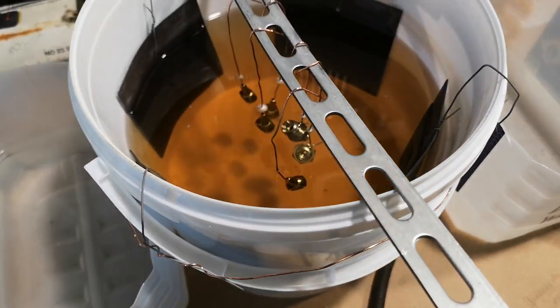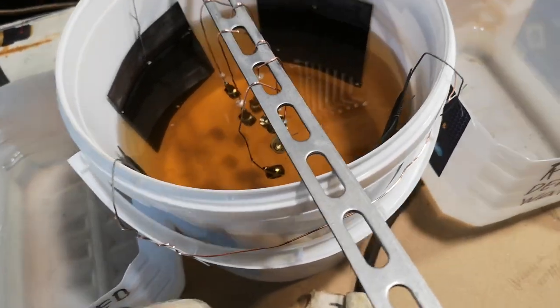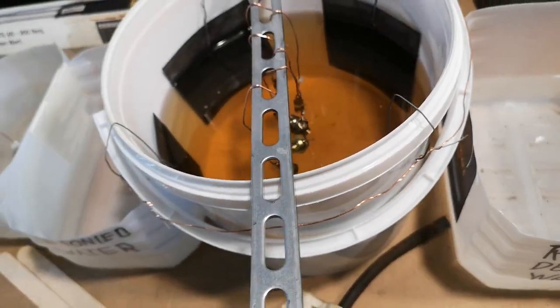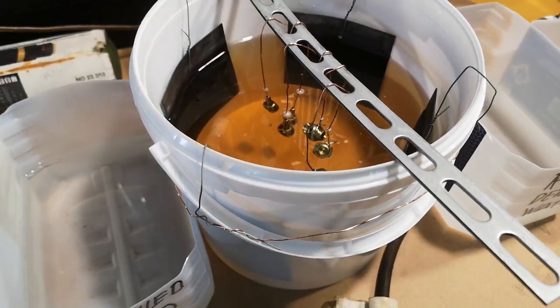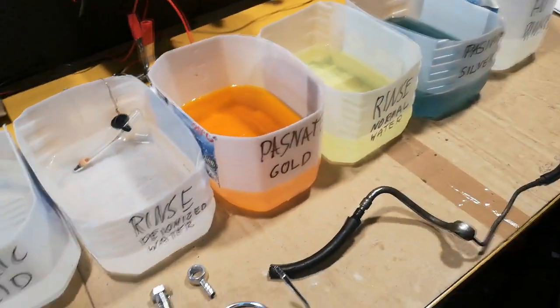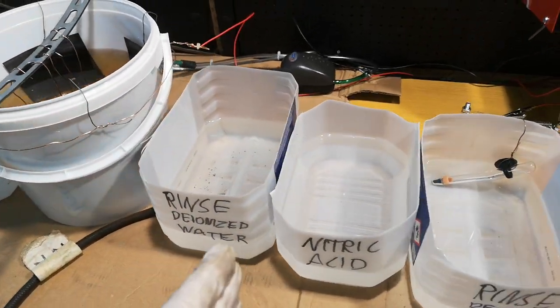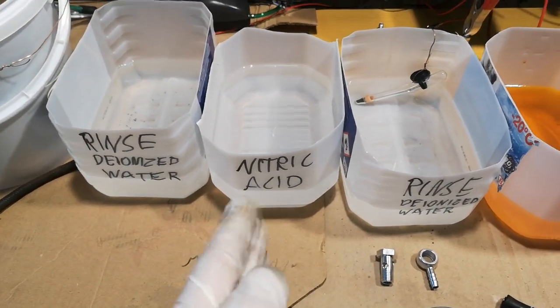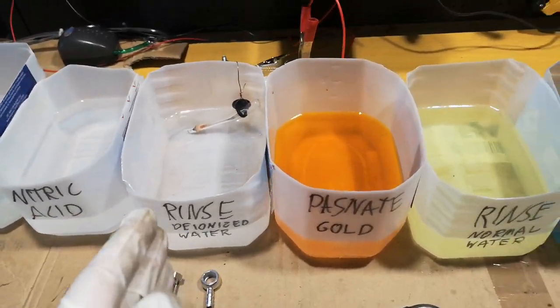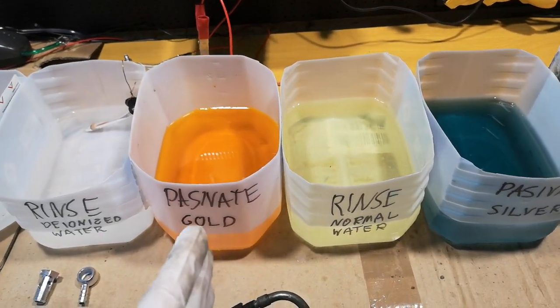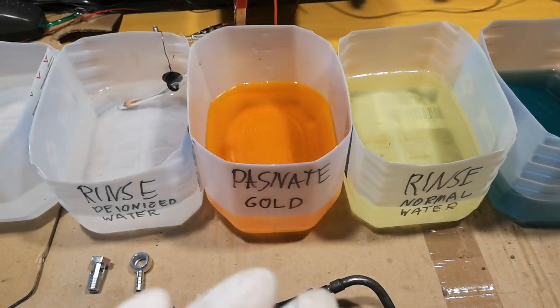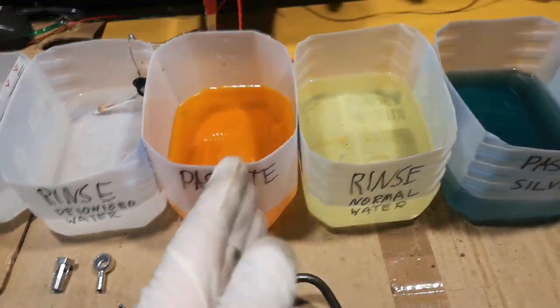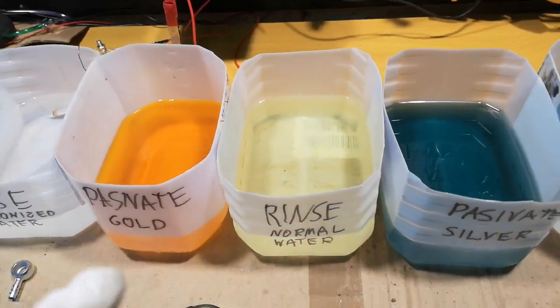But the longer you let your parts stay in this container, the better or the thicker layer of zinc will get. So let's just take one out and I'm going to show you the rest of the process. After taking it out from here, we're going to rinse it in deionized water. And then we're going to etch it with nitric acid for a few seconds, rinse it, and then choose one of two colors, either gold yellow or silver blue. After having it in the passivate solution, which deactivates the surface of the part, we're going to rinse it. And then we're going to hang it there, sorry for the mess, where it's going to dry.